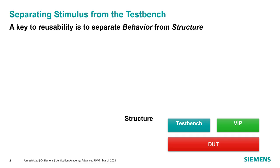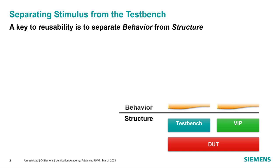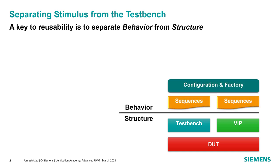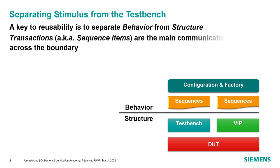One of the keys to reusability in UVM is the ability to separate behavior from structure. By structure, we mean the test bench, the environment, and the actual components that are going to be used to verify your DUT. The behavior is the sequences that you're going to be executing and the factory and configuration settings from the test that will tweak things a little bit. The transactions or sequence items are the main communication vehicle across that boundary, so the sequences generate transactions that flow through the test bench to the DUT.